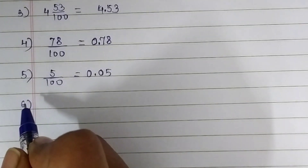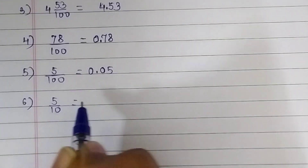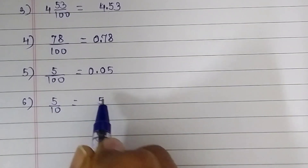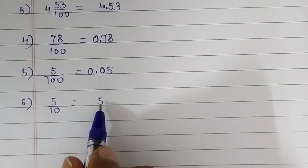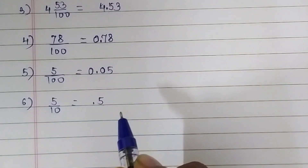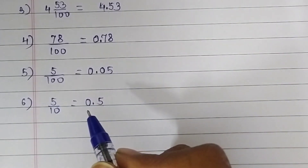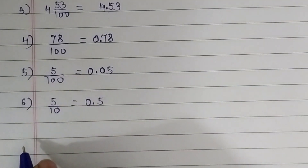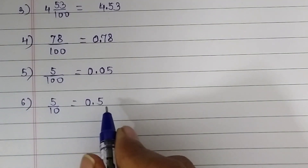Now the sixth question: 5 upon 10. Here our denominator has only one zero, so we move one place from our right side and place a decimal point. We put 0 for our unit place. Now the fraction is 0.5.